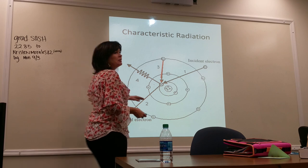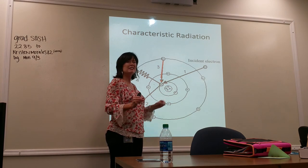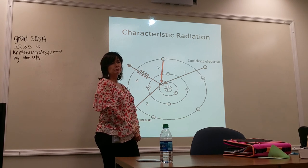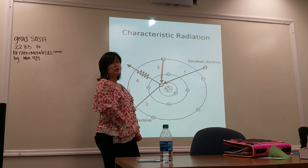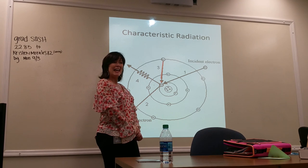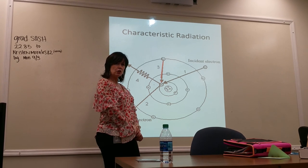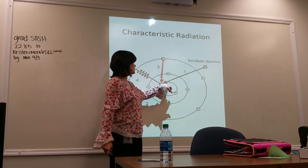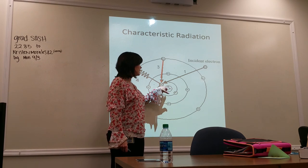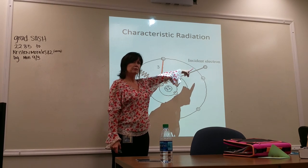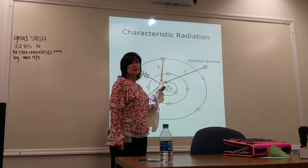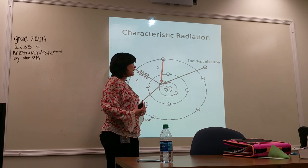You need to know that the K shell binding energy for tungsten is 69 keV. When taking a hand x-ray at 50–55 kV, will there be useful characteristic radiation? No — to knock the K shell electron out requires at least 69 kV. You cannot eject it with anything less than that.